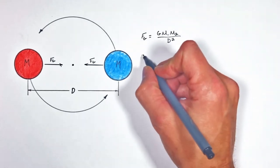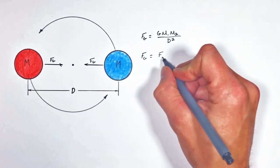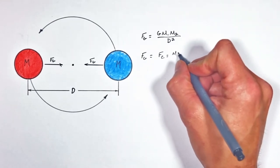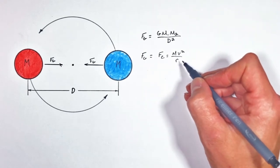In this problem, just like any other orbit, the force of gravity is going to be acting as the centripetal force, and we know centripetal force is given by mv squared over r, where v is the velocity of the object and r is the radius of orbit.